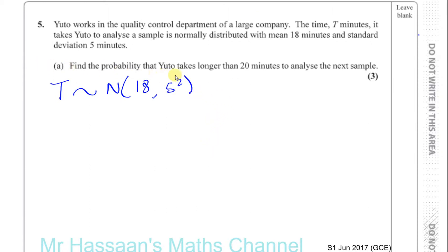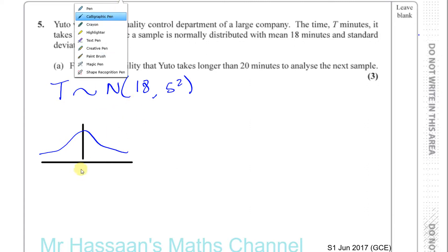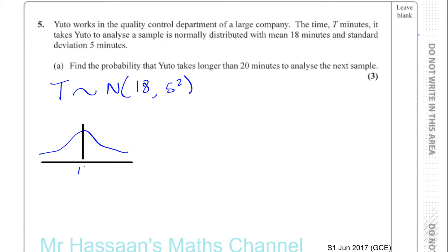Now find the probability that Yuto takes longer than 20 minutes to analyze the next sample. It's normally distributed, so the bell curve will have a symmetrical shape — it won't be skewed. The mean is 18, and remember that for a normal distribution, the mean, mode, and median are all the same because it's symmetrical.